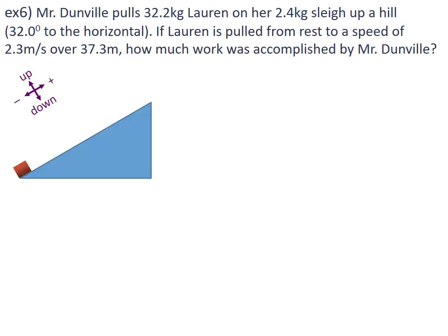Example 6: Mr. Dunville pulls a 32.2 kilogram Lorne on her 2.4 kilogram slate up a hill. He is pulling 32.2 kilograms added to 2.4 kilograms, so the total mass that he is doing work on is 34.6 kilograms. We're told the hill is 32 degrees from the horizontal.